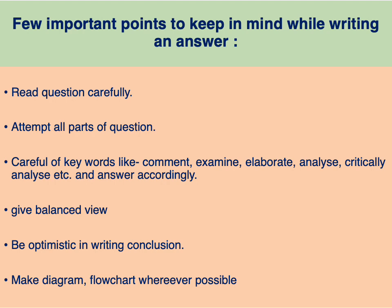Next, be optimistic in writing the conclusion. When you write a conclusion, you have to write an optimistic conclusion. Also, wherever possible, draw a diagram or a flow chart. In GS Paper 3 — economics, agriculture, or different industries — you can draw a map of India showing crop production or industries. Wherever possible, try to make a diagram, a flow chart, or an India map. Your answer will stand out.